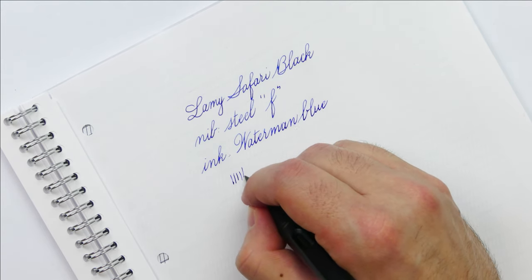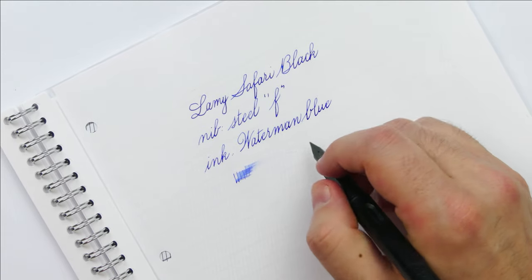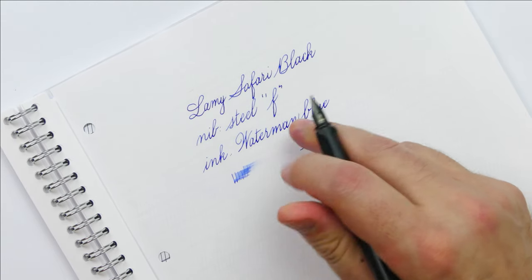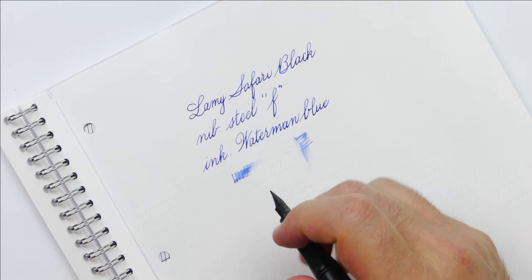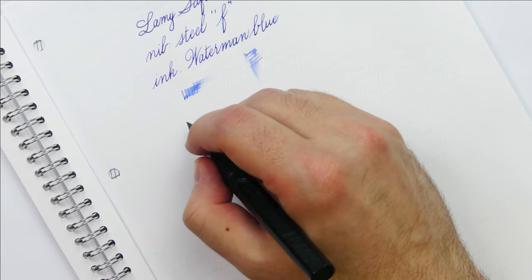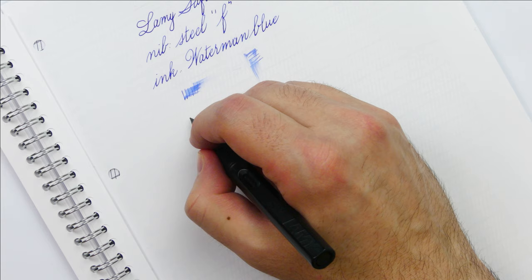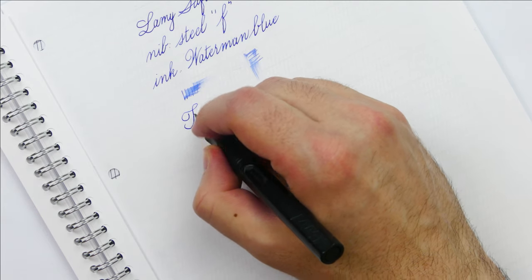As you can see, the nib behaves well when writing vertically, but the horizontal lines are very dry. This creates the excess of feedback mentioned above. The nib is hard, so there's no point in looking for any line variation.